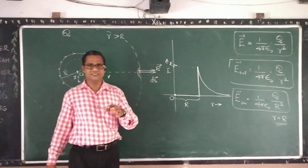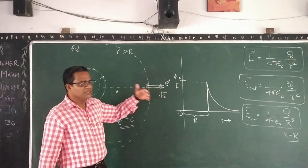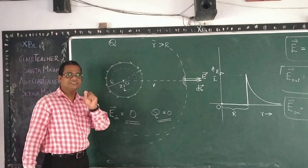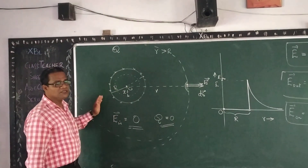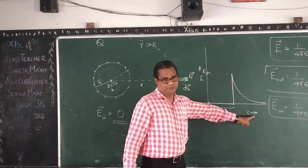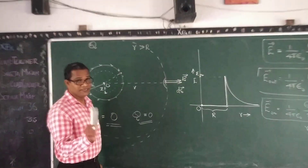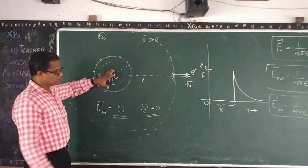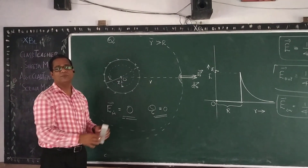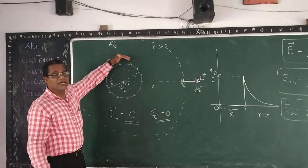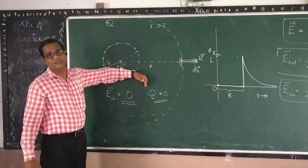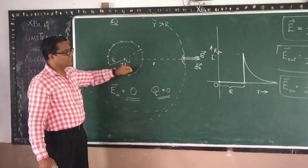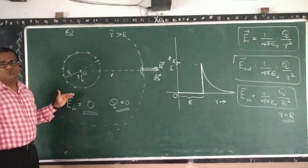For entrance exam aspirants, one more point based on this graph: if we assume a charged conducting solid sphere, the field variation will be exactly the same. This is because if charges are given to a solid conducting sphere, all the charges come out and distribute on its surface — that is the property of a conductor. Charge will not reside inside; it goes to and distributes on the surface. Because of that, the conducting sphere behaves like a charged shell, and all three results are applicable to the conducting sphere as well.